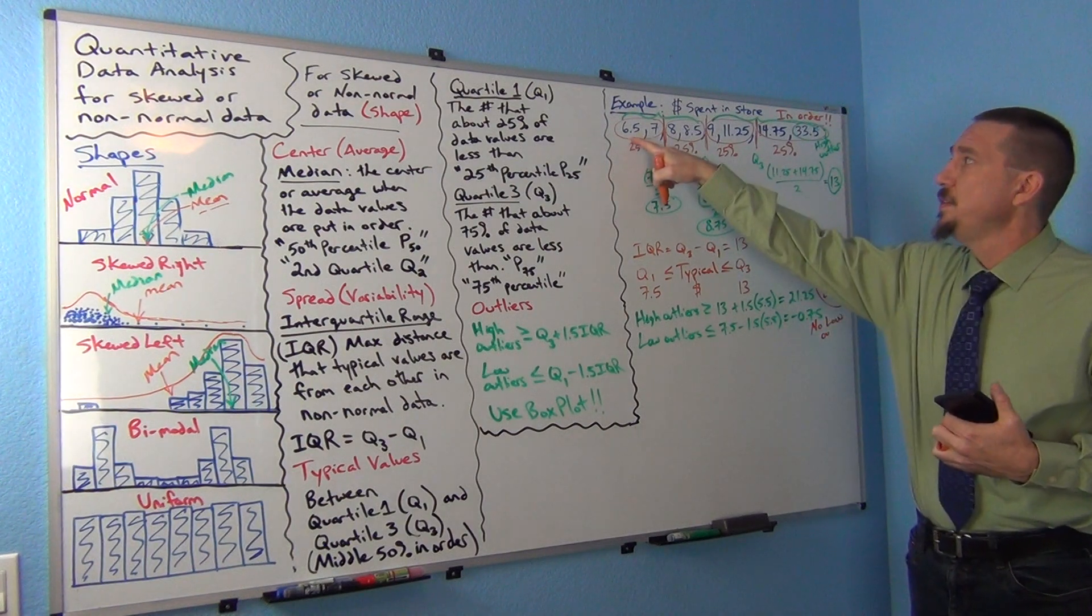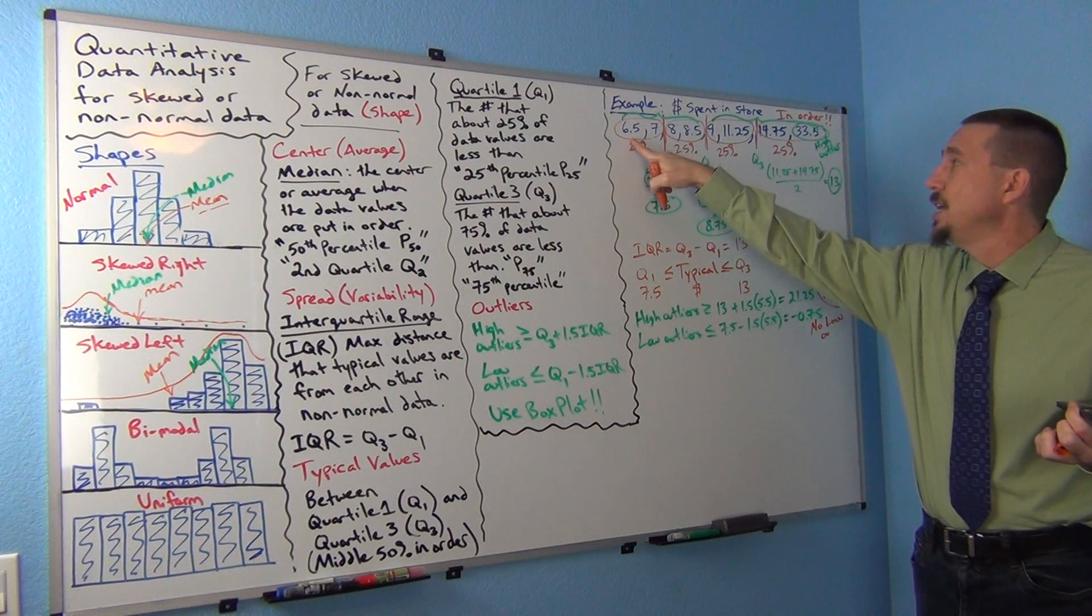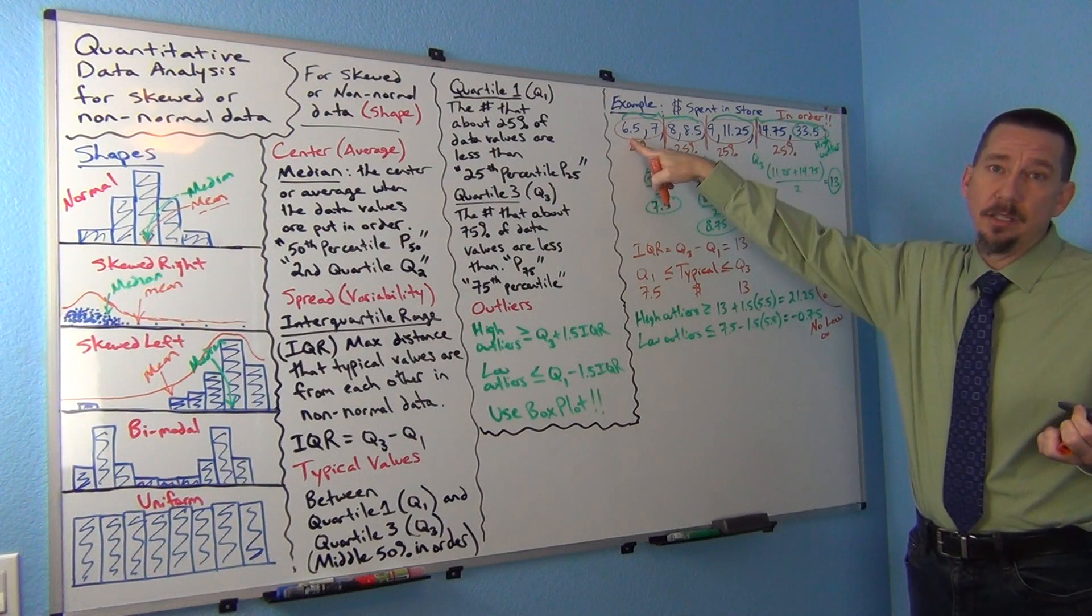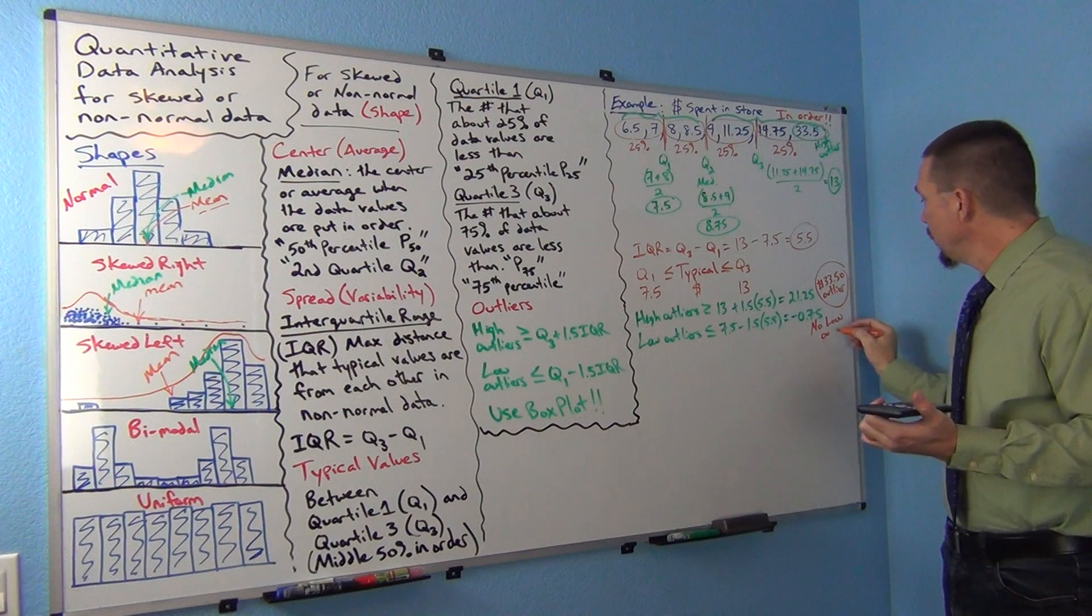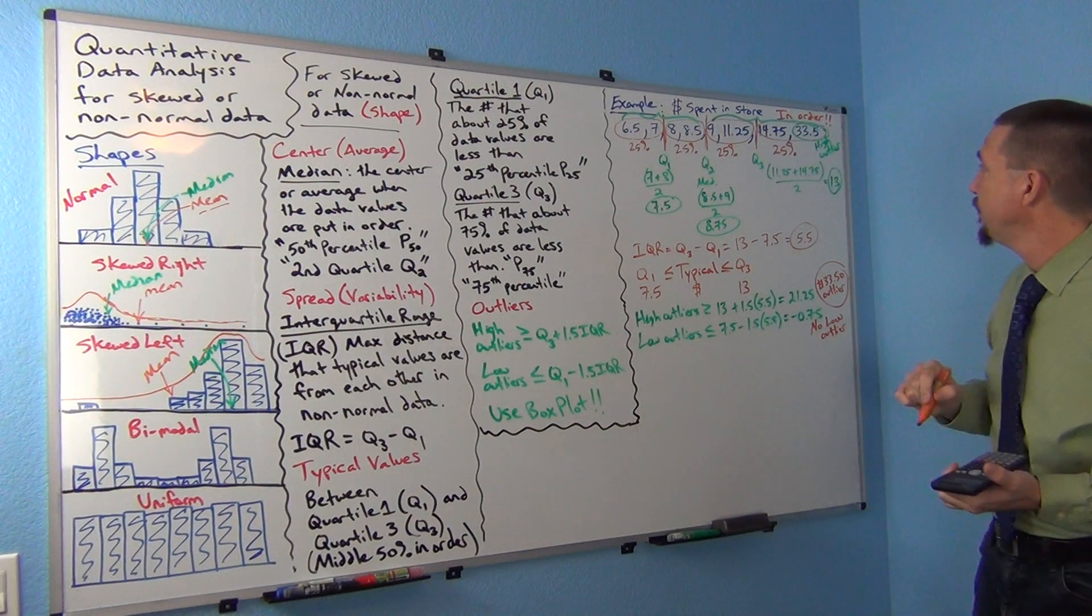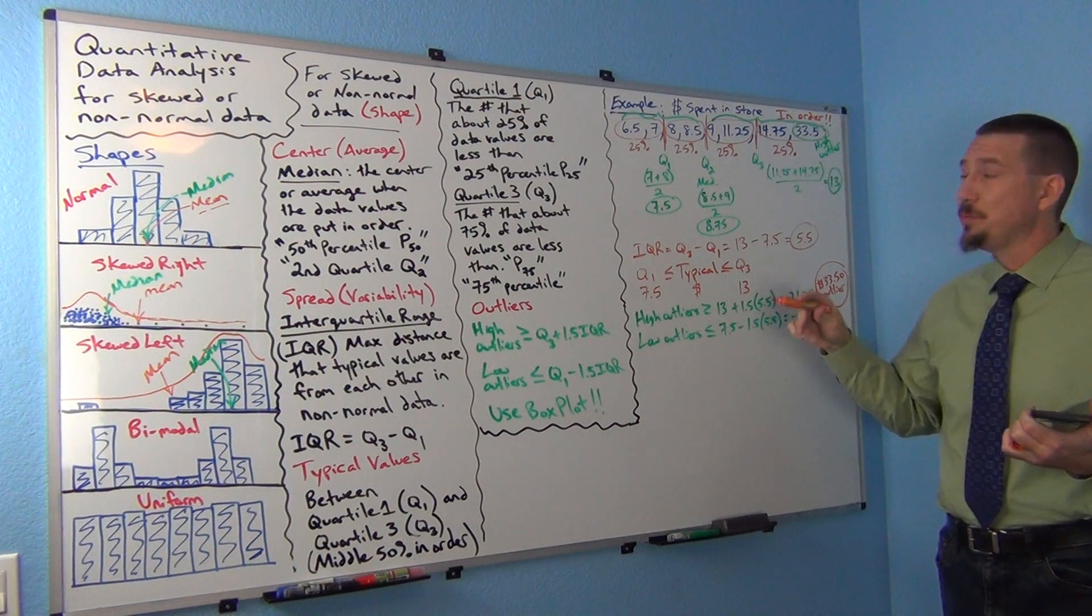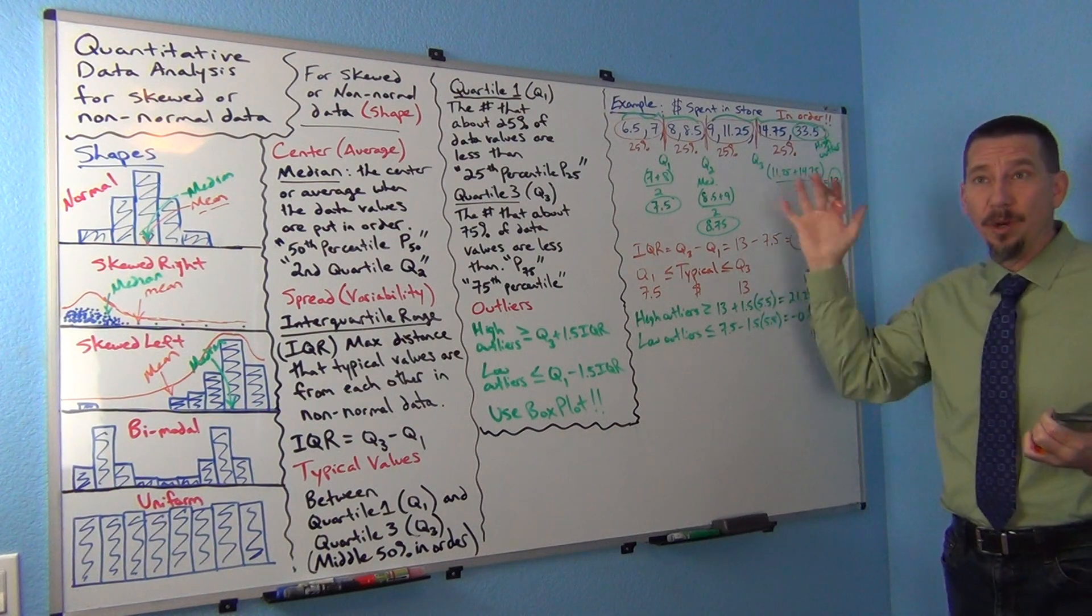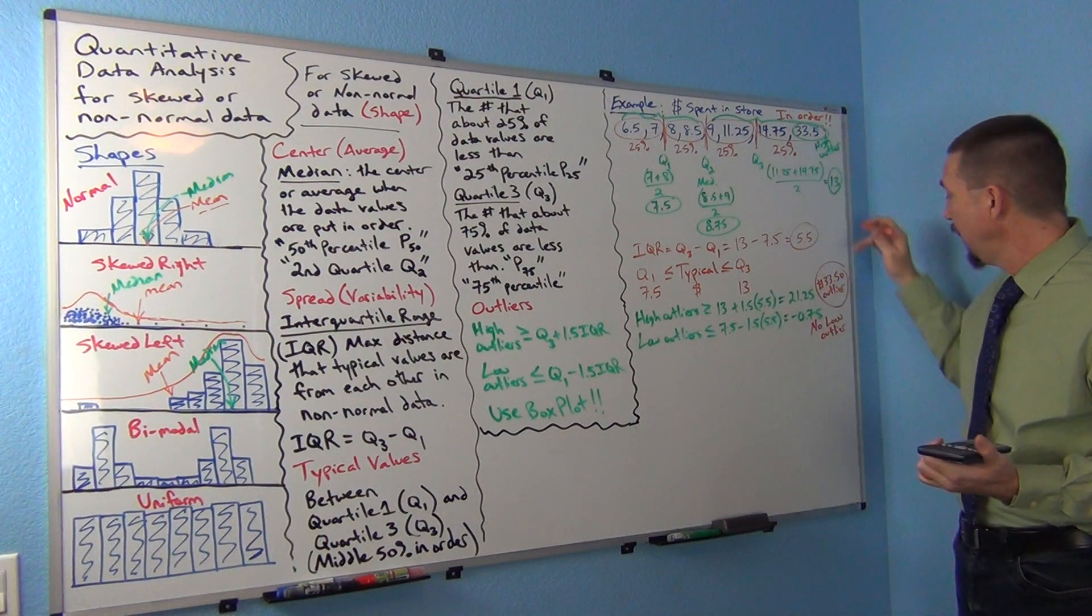In other words, $6.50 is not an outlier. It's not unusual for somebody to spend $6.50 in the store. So this data only really had one high outlier, the $33.50. By the way, that's also what would probably make this data very skewed right because of this one real high outlier here.